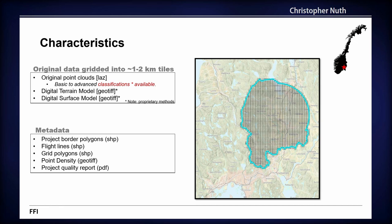All data is chopped into a national standard grid of one-to-two kilometer tiles. Companies must provide original point clouds that are classified — basic ones have ground, noise, and everything else; more advanced ones include power lines. Companies also provide digital terrain models, digital surface models, and metadata including flight lines, border polygons, point density, and a project quality report — which in my opinion is quite limited, as it doesn't really show exactly how they tie their data to the reference surface.